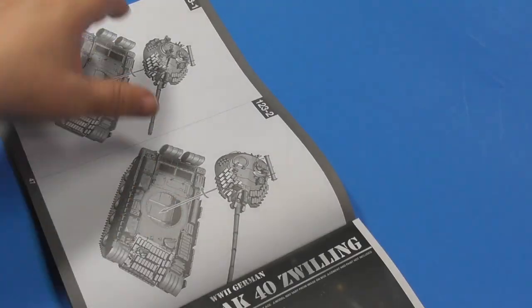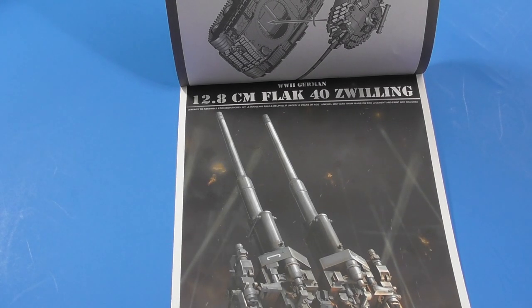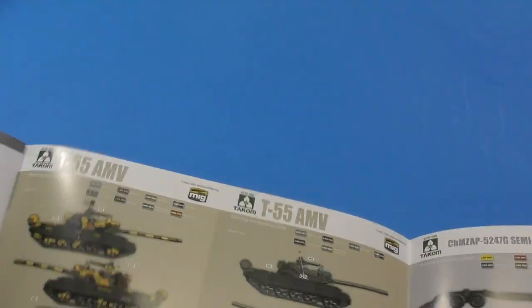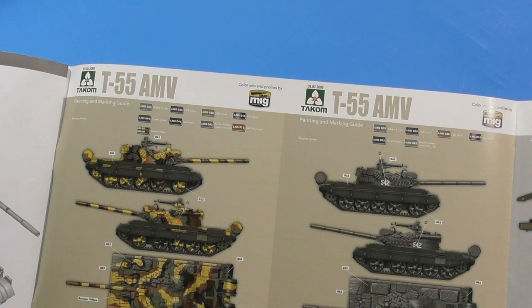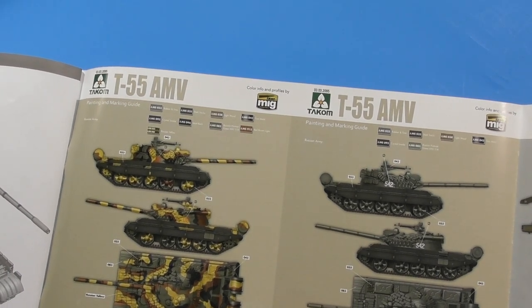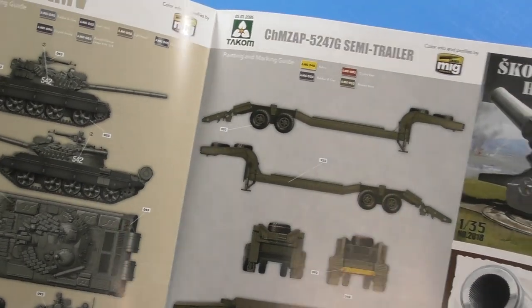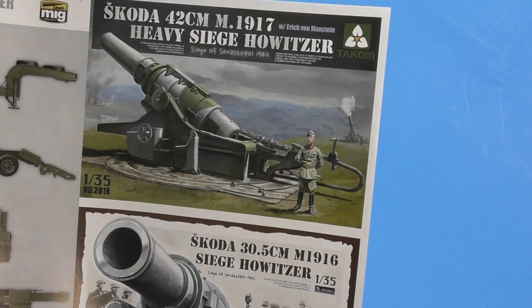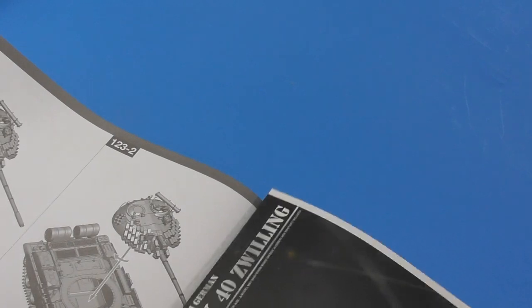And this is a new 12.8 centimeter flak gun they're coming out with. There are two different paint schemes. I like the more colorful one. And a trailer paint scheme. One and two more heavy weapons they're coming out with. And that's it. Very long kit review, very big kit.